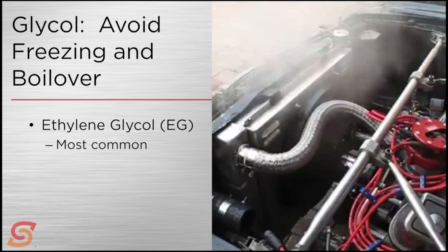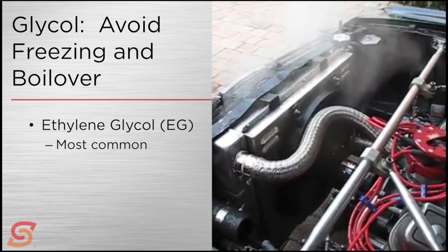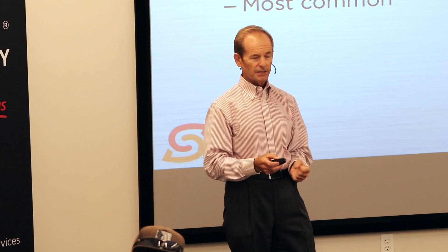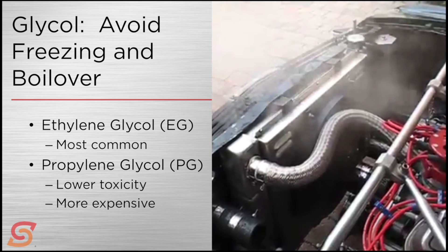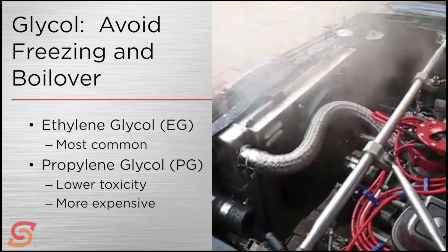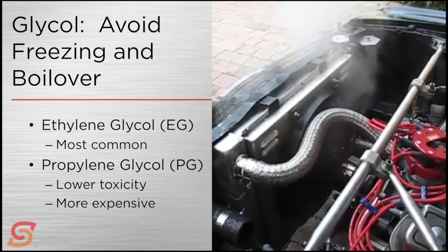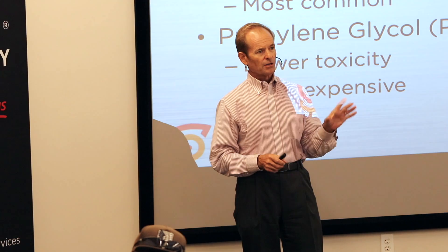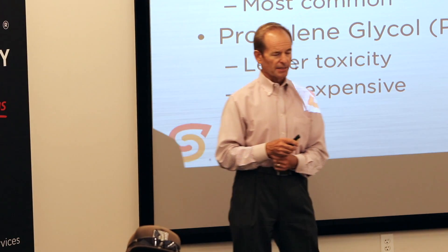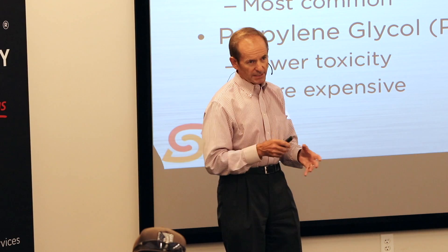The most common glycol used is ethylene glycol, sometimes abbreviated as EG. It's an industrial fluid made in very large plants in very large quantities; as a result it's widely used and very cheap — by far the most common in antifreeze formulations. Propylene glycol is the other glycol you'll see, often marketed as environmentally friendly or safer. Propylene glycol is much less toxic than ethylene glycol, which is why it's considered a greener product, but it's not made in anywhere near the quantities of ethylene glycol.